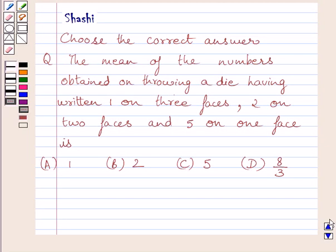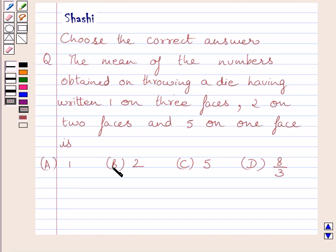Hi and welcome to the session. I am Shashi and I am going to help you with the following question. The question says: the mean of the numbers obtained on throwing a die having written 1 on 3 faces, 2 on 2 faces and 5 on 1 face is. We have to choose the correct answer from A, B, C and D.